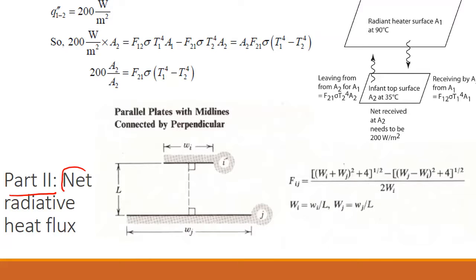Here we are going to calculate the net radiative heat flux from the heater to the infant. Notice the word net. That means we are not just calculating how much is coming from the heater to the infant, but the net amount, because the infant is also giving some of the energy back to the heater surface.